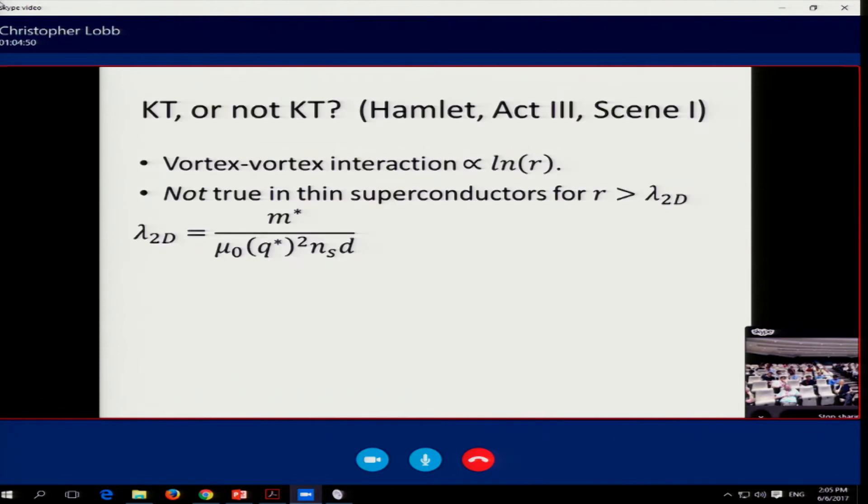So no correlation functions here. None of these fancy things. Just voltages and currents. All right. So, since I didn't hear any noise, no one laughed when I said KT or not KT. It was an allusion to Hamlet. No one laughed still, so I will just let that go. Kosterlitz and Thouless in their original papers pointed out very clearly that the vortex-vortex interaction has to be proportional to the log of the separation of the vortices. Otherwise, you won't see the transition. And that's not true in superconductors. Because the superfluid is charged, it generates a magnetic field itself. And that screens the interaction between a vortex-anti-vortex pair.